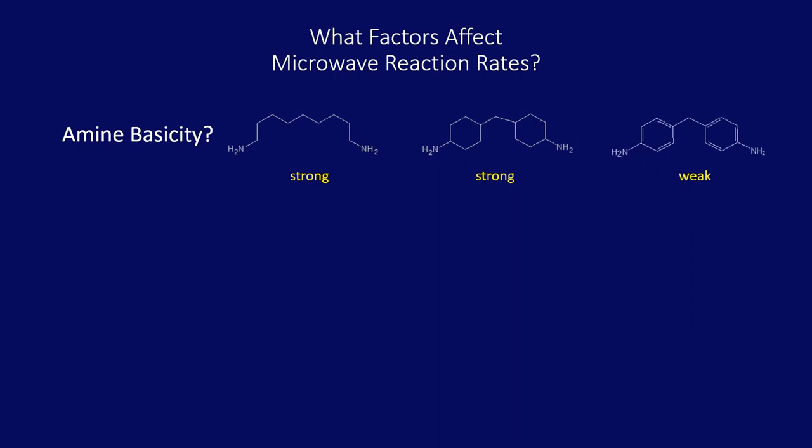For the case of amines reacting with epoxides, the basicity of the amine should have a strong effect on the reaction rate. The aliphatic and allicyclic amines on the left are stronger bases than the aromatic amine on the right. This should be the same for regular heating or microwave heating.